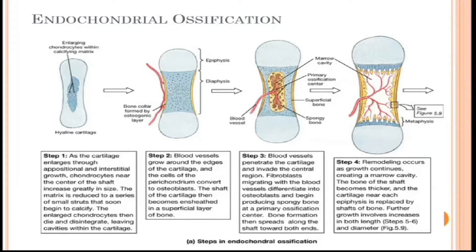Here we are going to discuss endochondral ossification. As the name suggests, endochondral means 'from within the cartilage.' This is a type of secondary ossification where first the cartilage exists as a template for a particular bone, and then bone material is filled in within that template.